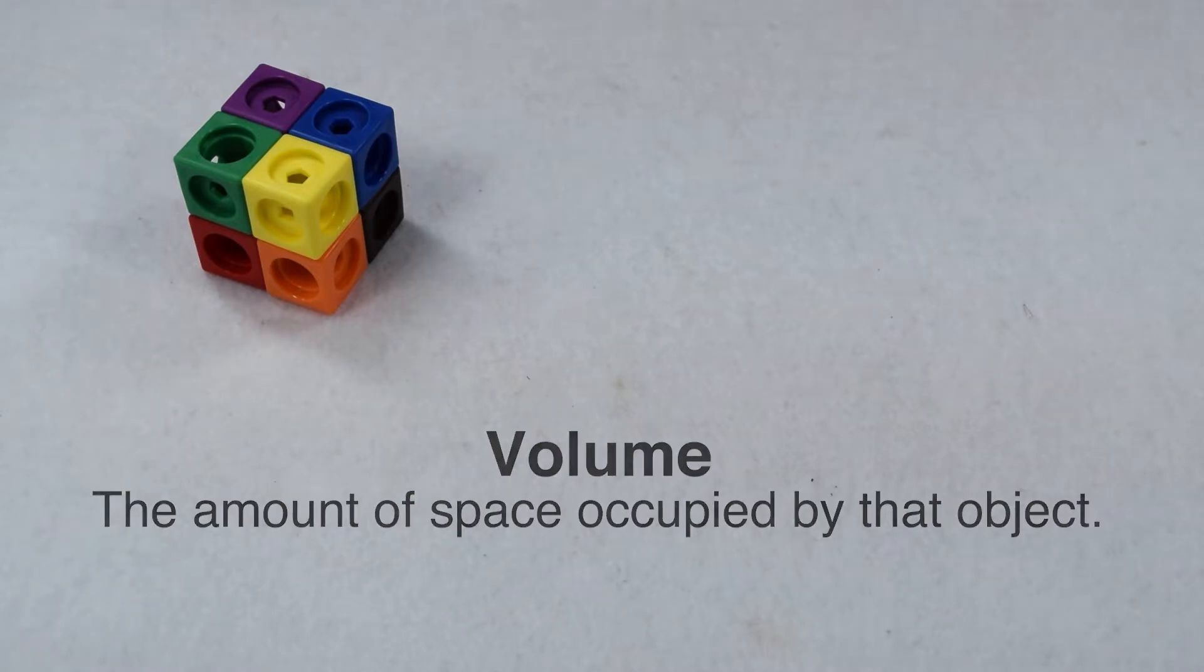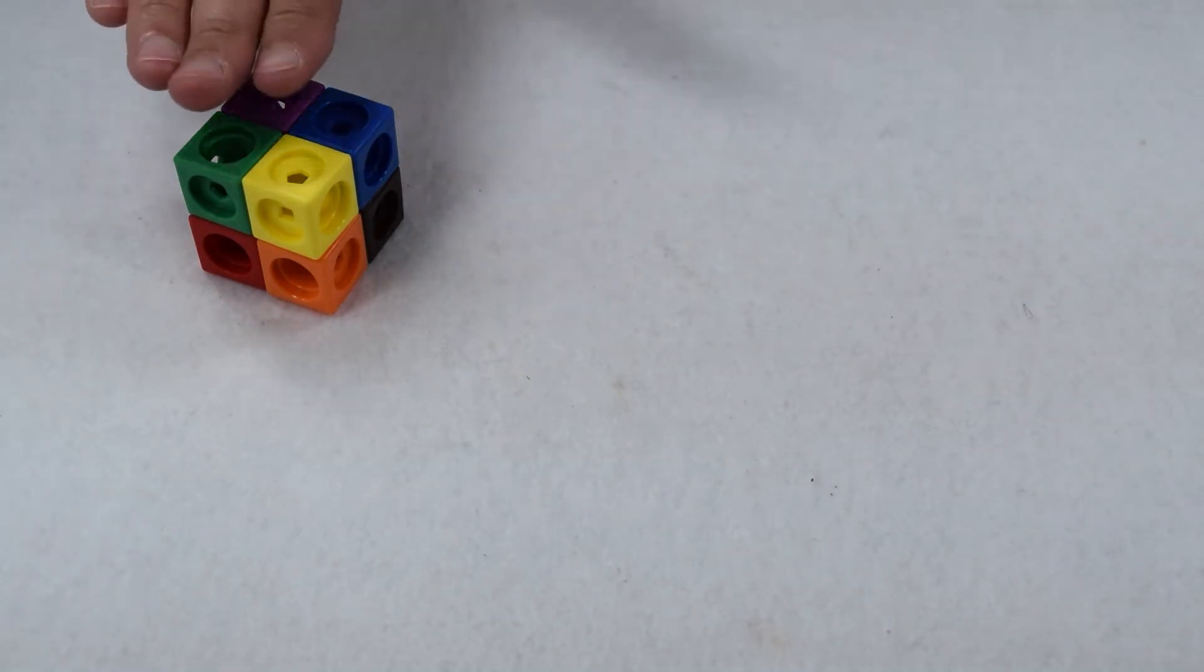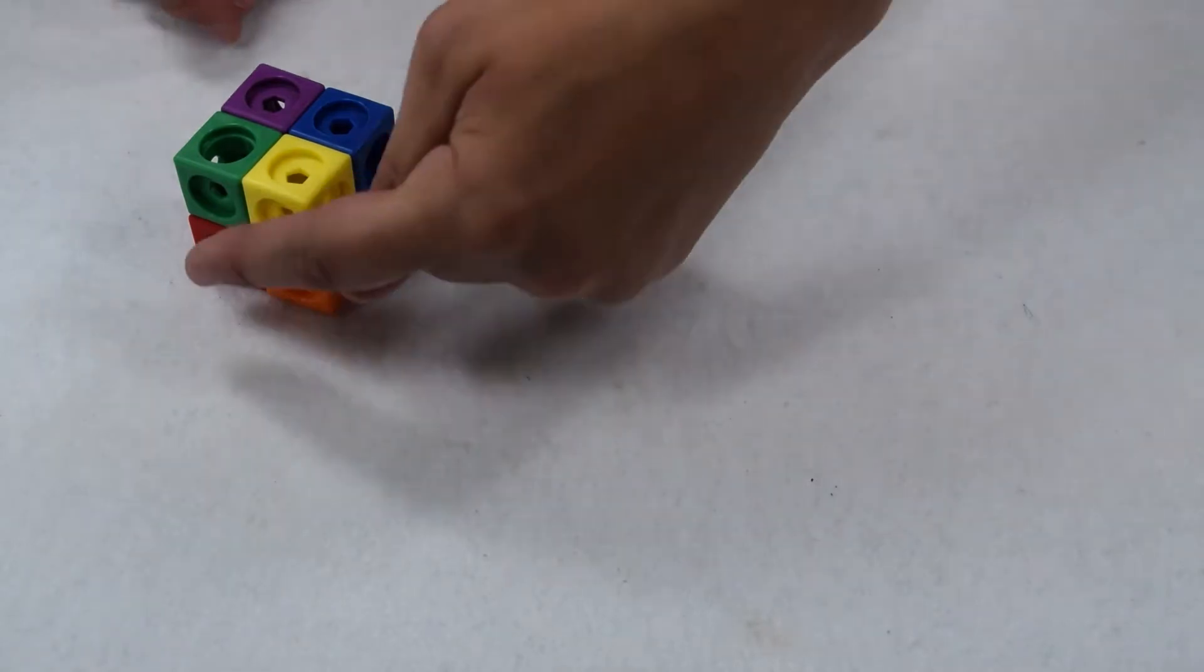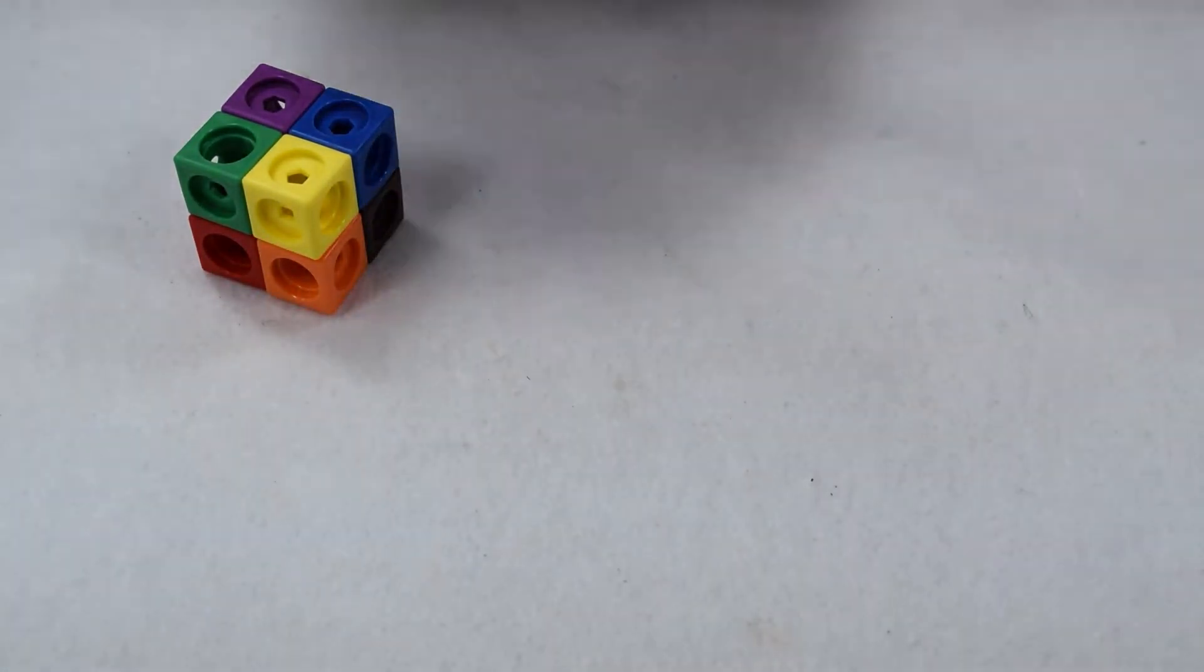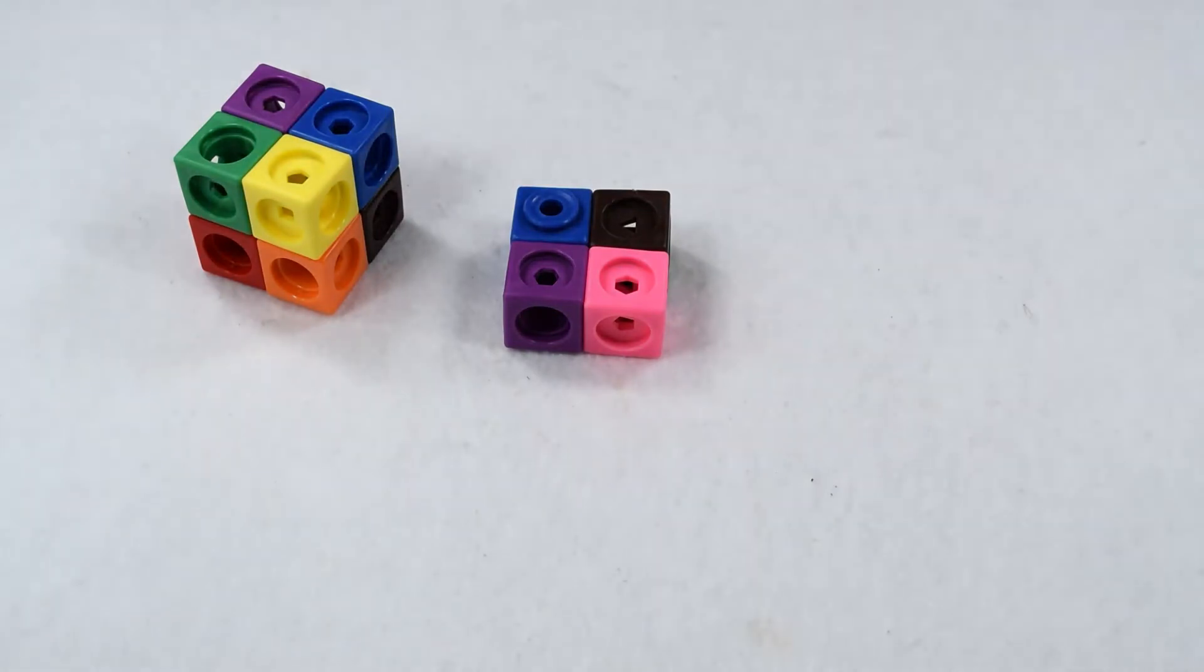We can also think of volume as how much it takes to fill that object. Let's use the dimensions of our cube and build it again so we can see how many we need. Since our base is a 2×2 square, we are going to build a 2×2 square. That means we're going to use a total of 4 cubes.